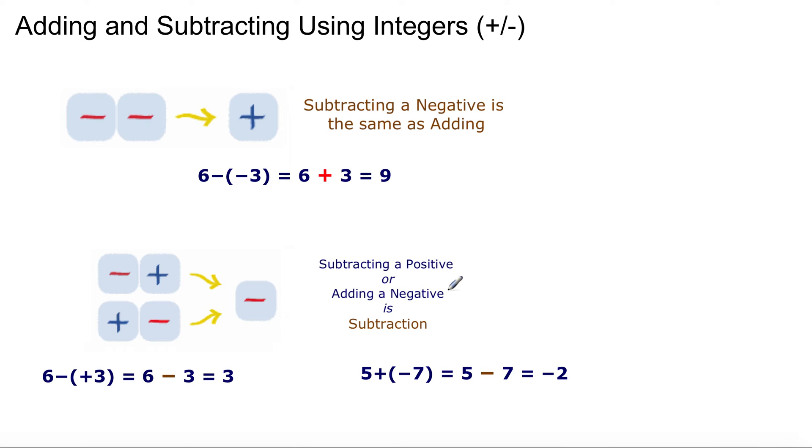Subtracting a positive or adding a negative is subtraction. So if you see unlike signs, it's subtraction. Negative and a positive, or positive and a negative between the two numbers, it becomes negative. So it's subtracting. So 6 minus plus 3 is the same as saying 6 minus 3 equals 3. So if you move on the number line, you start at negative 6, and you add 3 more, you're going to go to 3. Same example here. 5 plus negative 7 is the same as saying 5 minus 7 equals negative 2. Subtracting a positive or adding a negative, unlike terms, will get you to subtraction.